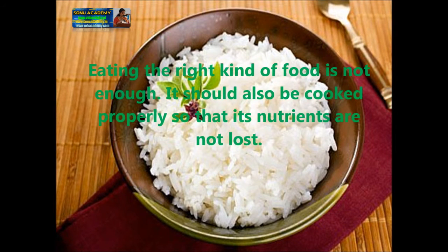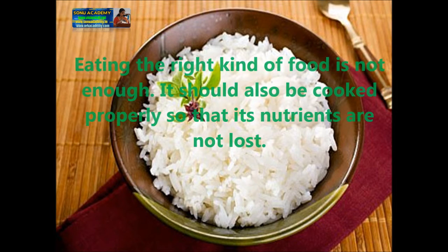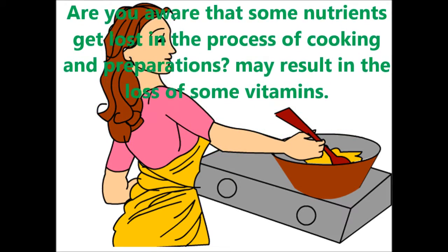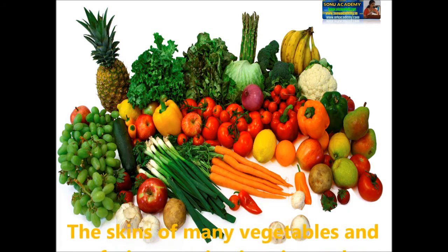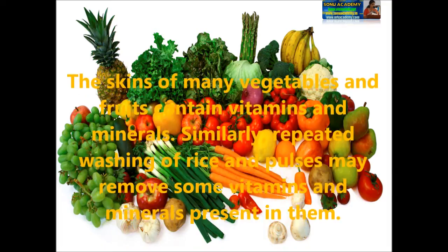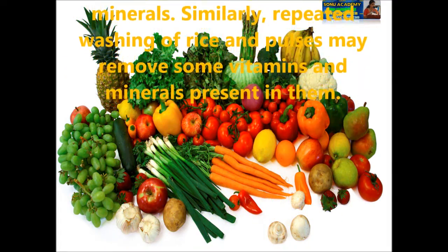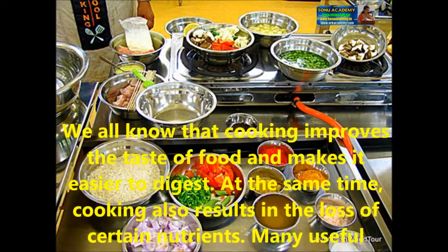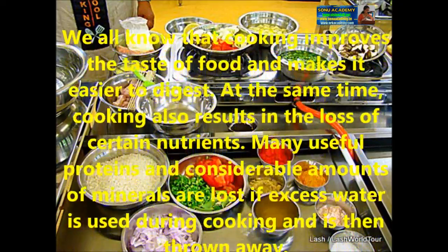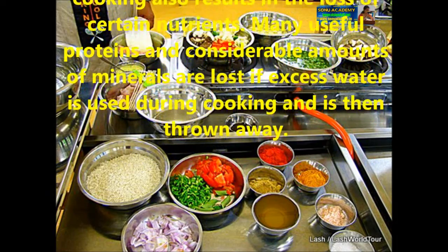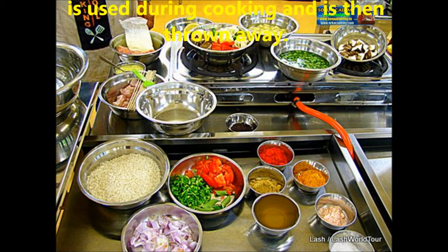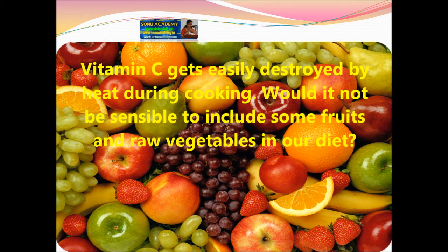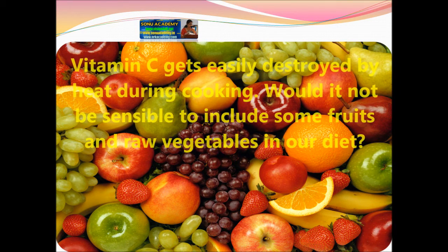Eating the right kind of food is not enough — it should be cooked properly so that its nutrients are not lost. Some nutrients get lost during cooking and preparation, and sometimes this may result in the loss of vitamins. The skin of many vegetables and fruits contains vitamins and minerals. Repetitive washing of rice and pulses may remove some vitamins and minerals. Cooking also results in the loss of certain nutrients; many proteins and minerals are lost if excess water is used during cooking and then thrown away. Vitamin C, for example, gets easily destroyed by heating. It would be sensible to include some fruits and raw vegetables in your diet.